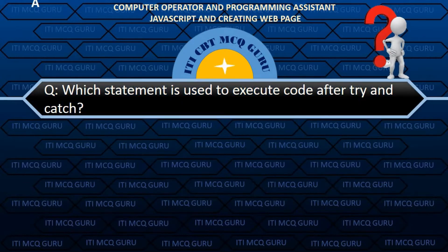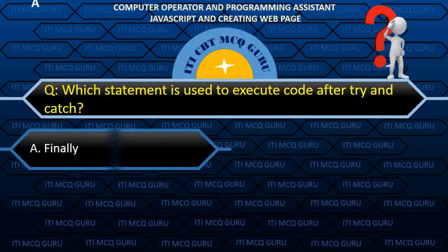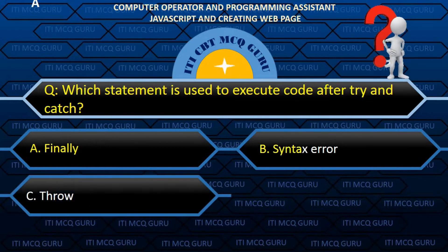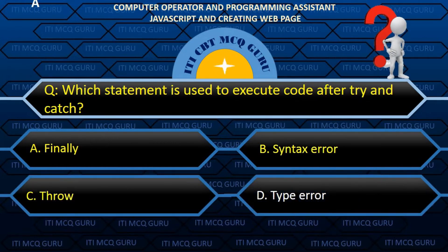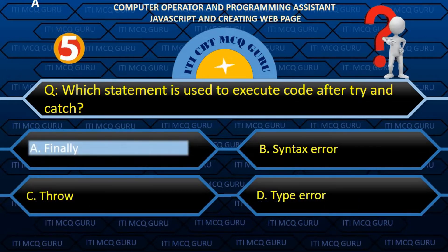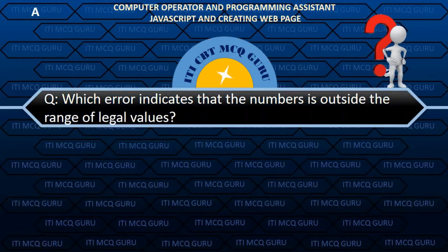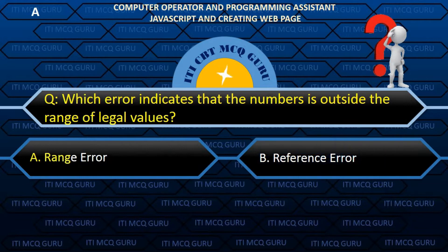Which statement is used to execute code after try and catch? C. Finally. Which error is thrown when a value is outside the range of legal values? A. RangeError.